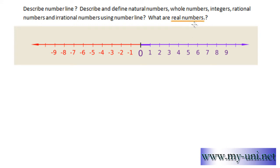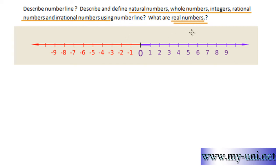By saying that, all these numbers — natural numbers, whole numbers, integers, rational numbers, and irrational numbers — are subclassifications of real numbers. So any number you can think of is a real number. Real numbers have been subclassified into natural numbers, whole numbers, integers, rational numbers, and irrational numbers.